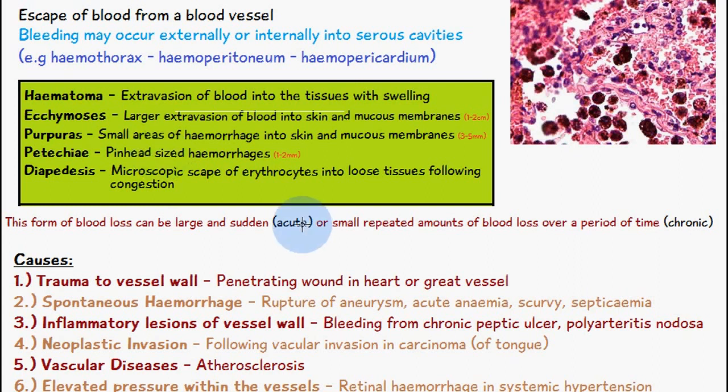We also have petechiae, which are pinhead-sized hemorrhages of only one to two millimeters. The actual escape of red blood cells into loose tissues is called diapedesis — that is the microscopic escape of erythrocytes into loose tissues.